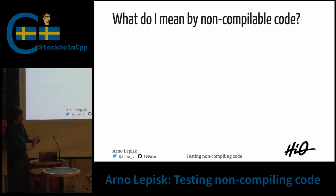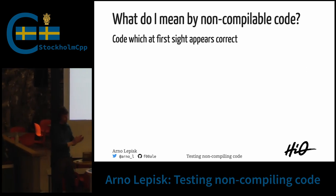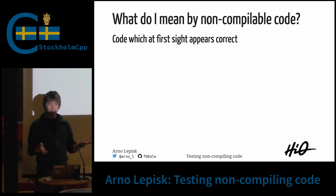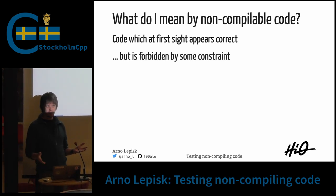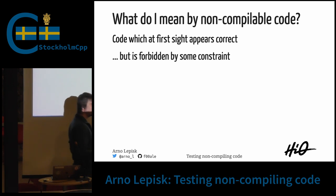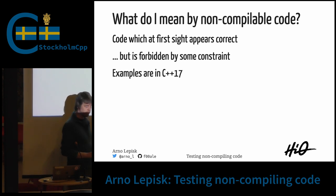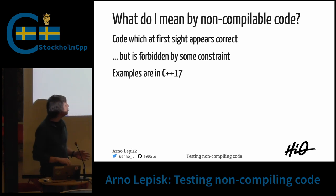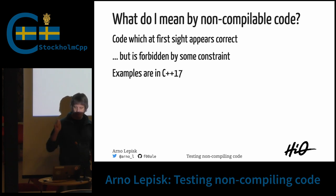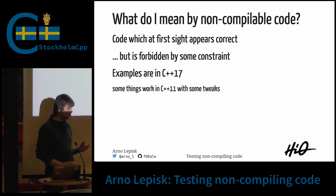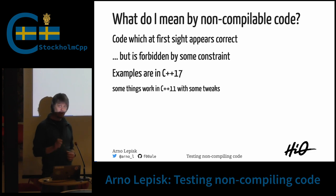What do I mean by non-compilable code? Code which seems correct syntactically, but we have some kind of constraint that will make it not compile. All my examples are, as far as I know, valid C++17. I might have been working with some compiler extension. Some things work even down to C++11, sometimes with some tweaks.